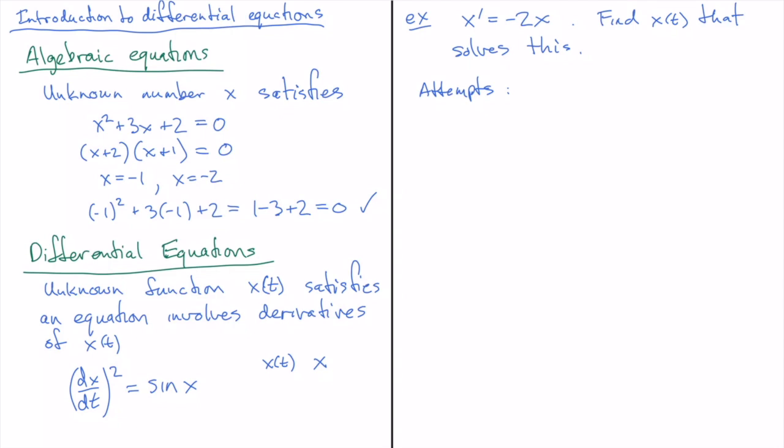So we know, or at least I hope you remember, that the function x of t equal e to the t has a very simple derivative, and that is x prime is going to be e to the t, no change. So this is a bad guess because x prime of t is not equal to minus 2 times x of t, but it suggests a way of finding the right answer here. So this is not correct.